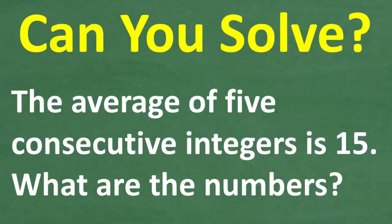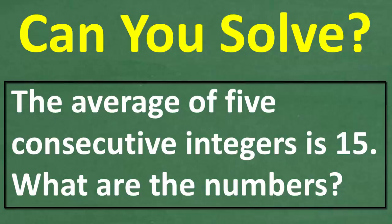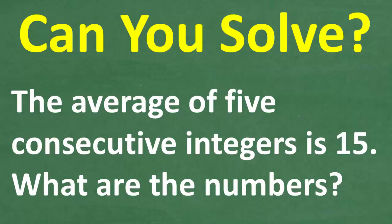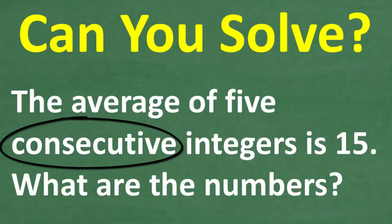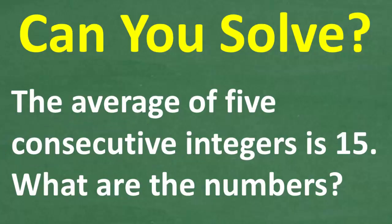So the first step in solving any math problem is to read it. The average of five consecutive integers is 15. What are the numbers? This is not that difficult of a problem assuming you know what these two words mean — consecutive and integers. Go ahead and solve this problem and put your solutions in the comment section. I'm going to show you the correct answer in just a moment and then walk through step by step how to solve this particular problem.